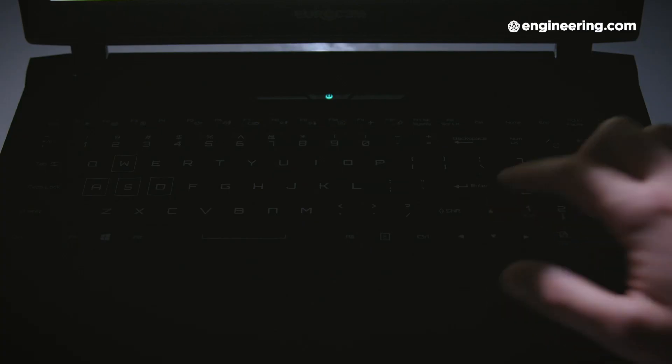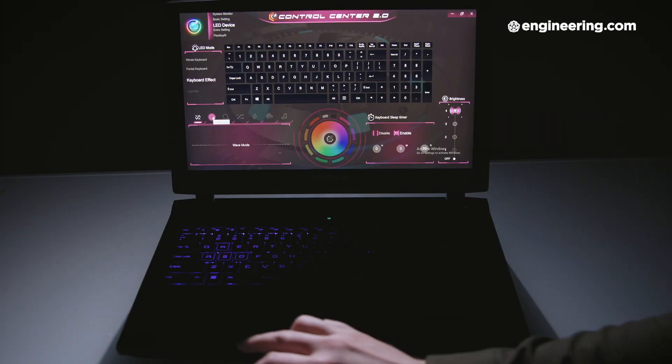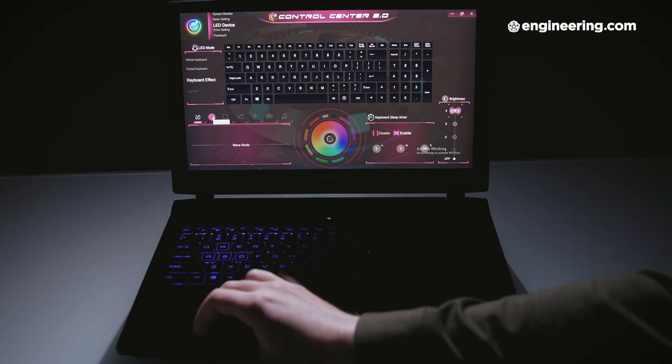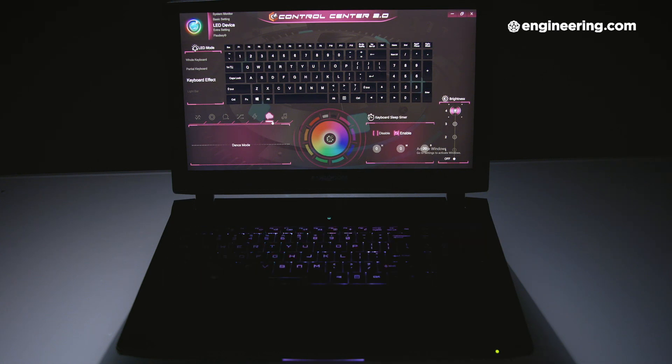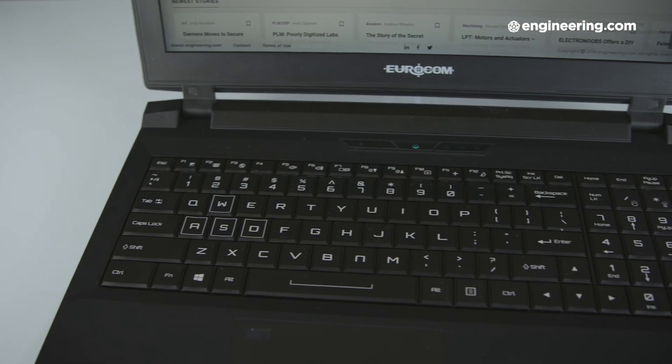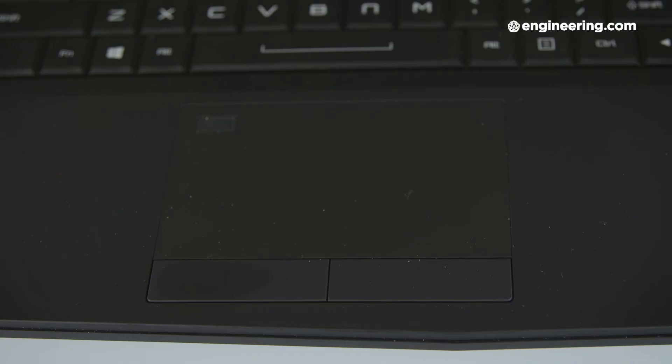One thing you'll notice right away about the Sky X4C is this fancy keyboard backlighting. I'm not much of a gamer myself, but they seem to enjoy colorful keyboards, and the Sky X4C delivers. You can customize the keyboard endlessly with different colors and patterns, so I guess that's cool. The keyboard itself is really nice to type on, and includes a numpad, which I always appreciate. But the trackpad isn't very good, so you'll probably want to use one of those 6 USB ports for a mouse.